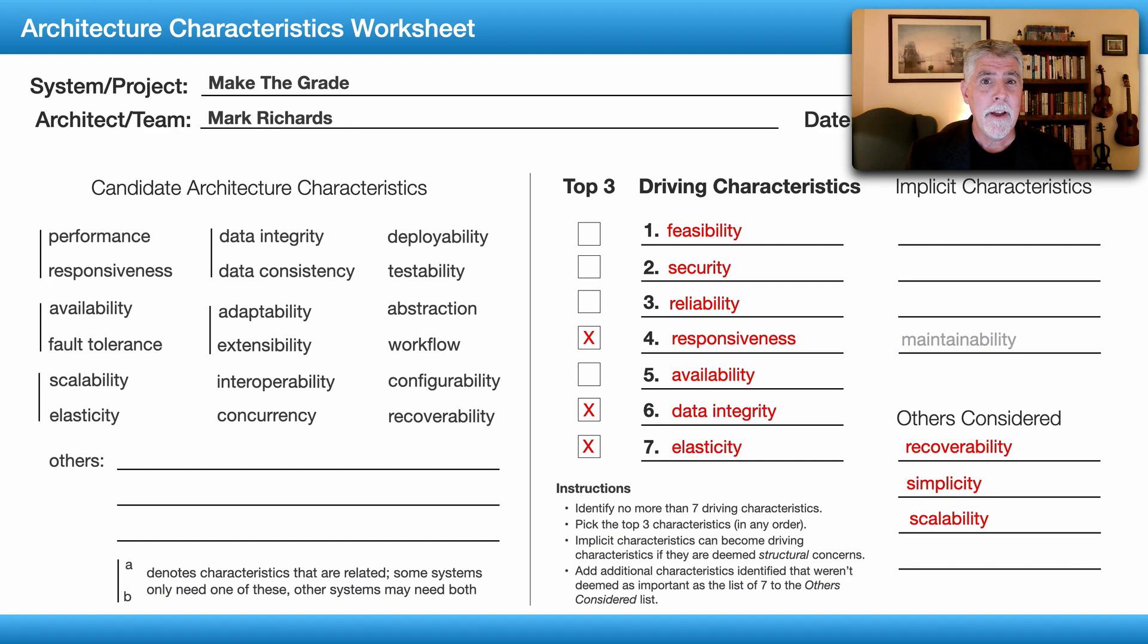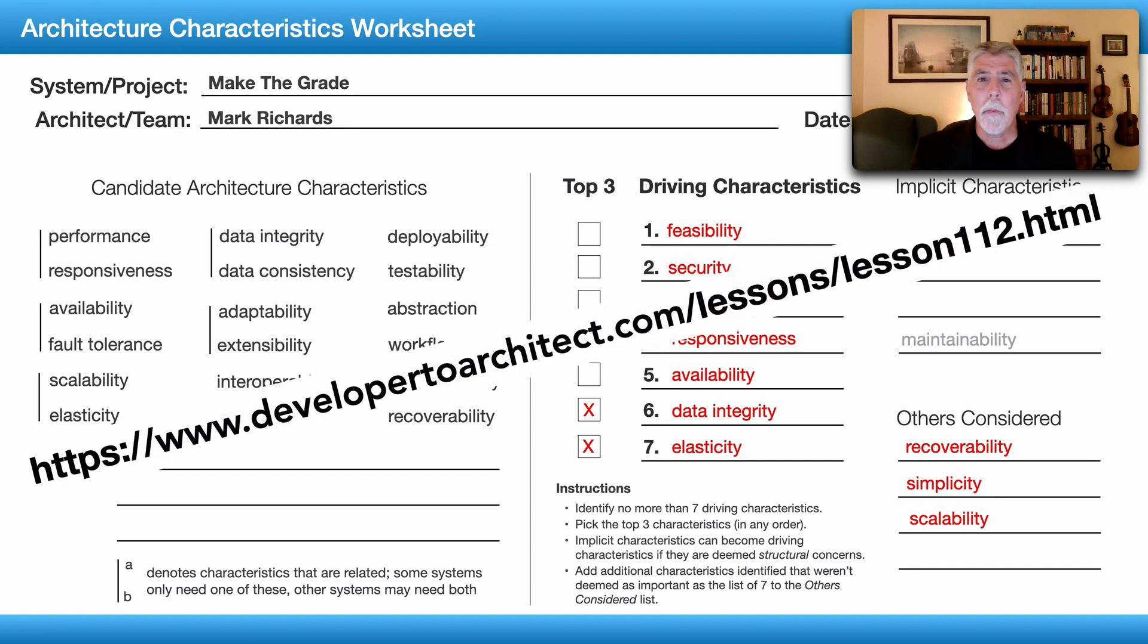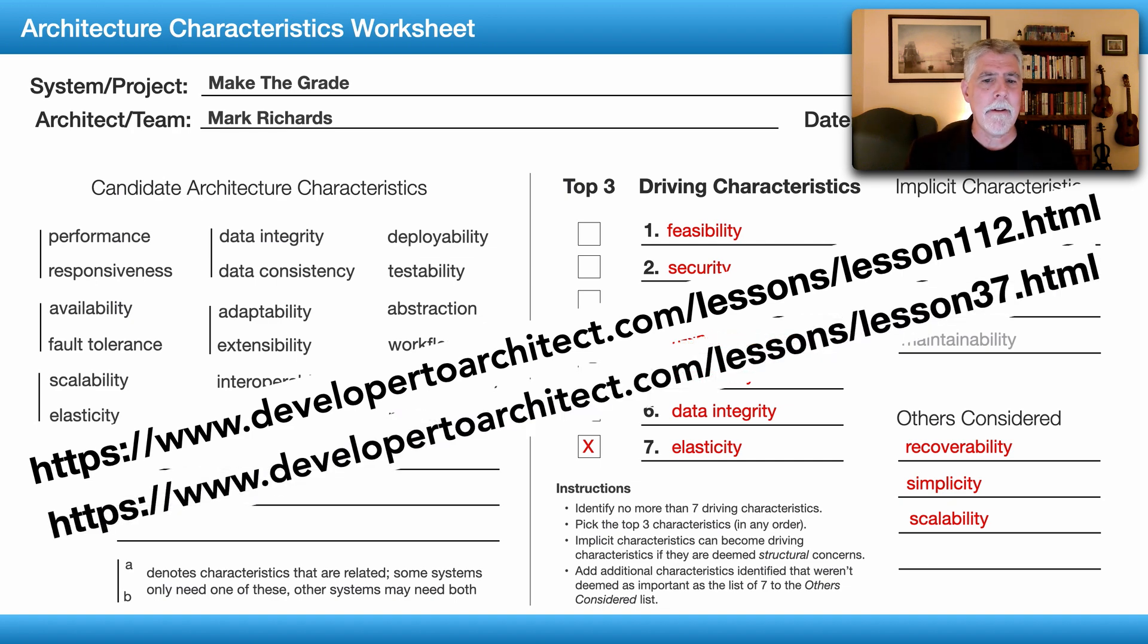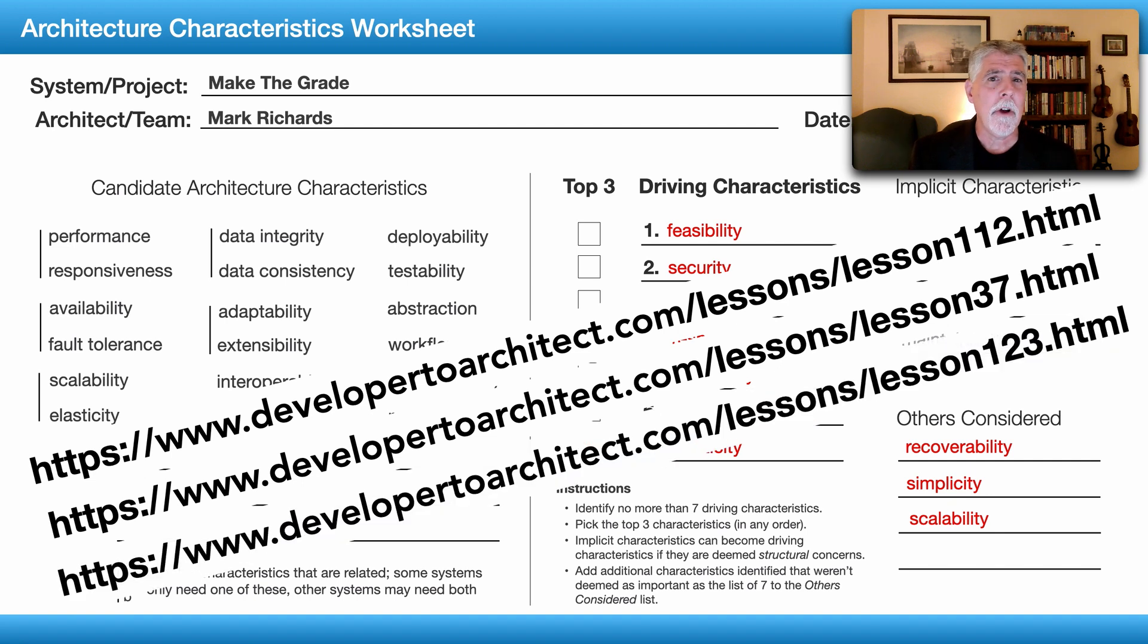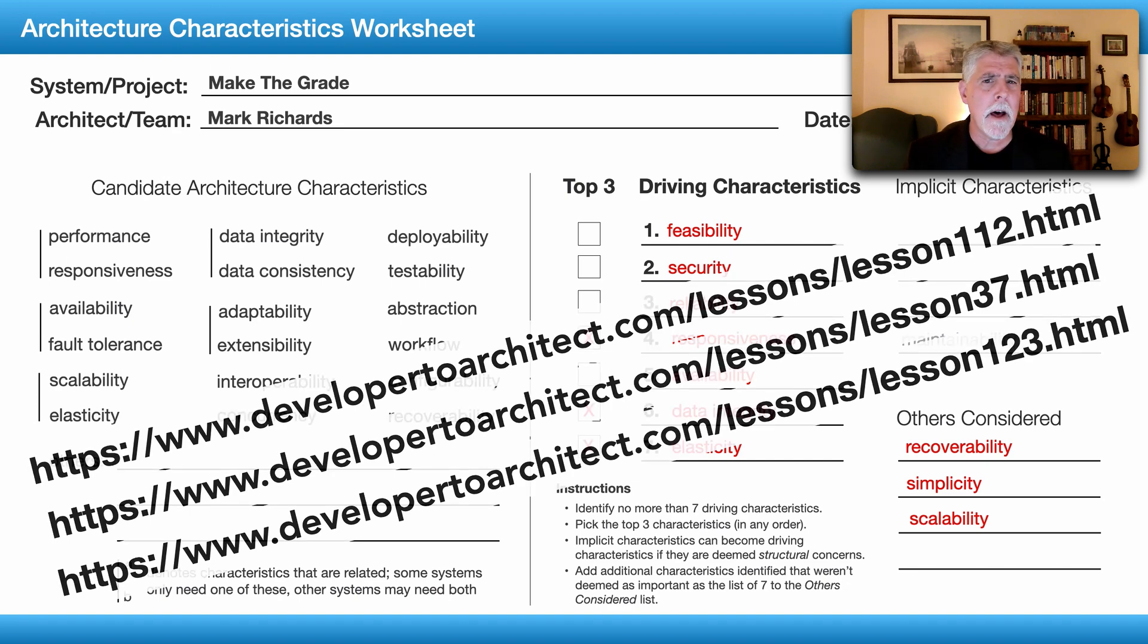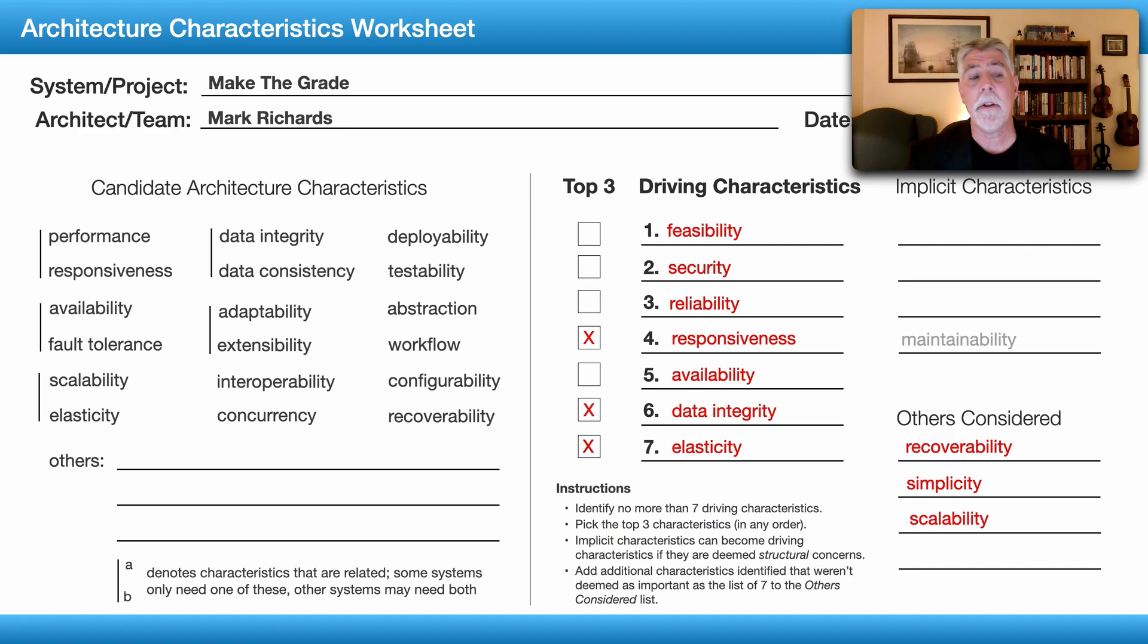And as a matter of fact, there's three lessons you can go to to get more information about this part. Lesson 112 really talks about this overall characteristics worksheet which you can download and how to use this. Lesson 37 talks about how to identify these architectural characteristics and gives some examples with deriving those from business goals, business needs, and business concerns. And then finally, lesson 123 which also shows aspects of composite architectural characteristics which help guide us in terms of those driving ones we record here. I've got a lot of other lessons in between those that talk about the differences between performance and responsiveness and what scalability means, what elasticity means, and so lots of different lessons on these architecture characteristics.